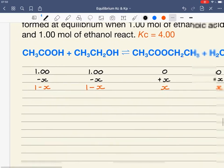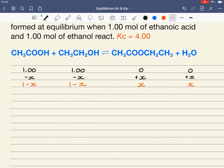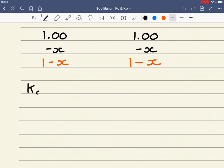So I've now got my moles at equilibrium. I'm going to write an expression for Kc, which is the concentration of the products over the concentration of the reactants.